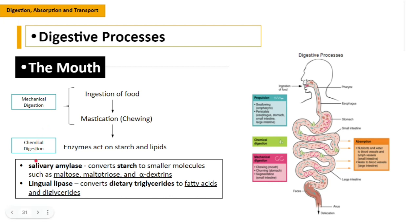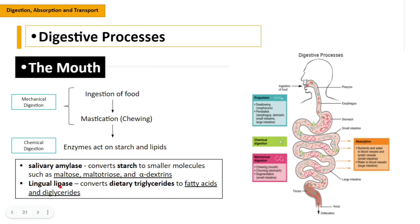The other process inside the mouth is chemical digestion. Enzymes act on the starch and lipids in the food. Our salivary amylase converts starch to smaller molecules such as maltose, maltotriose, and alpha-dextrins. Our lingual lipase converts dietary triglycerides to fatty acids and diglycerides. So lipase acts on lipids — triglyceride is a type of lipid — and lingual lipase degrades dietary triglycerides inside our mouth.